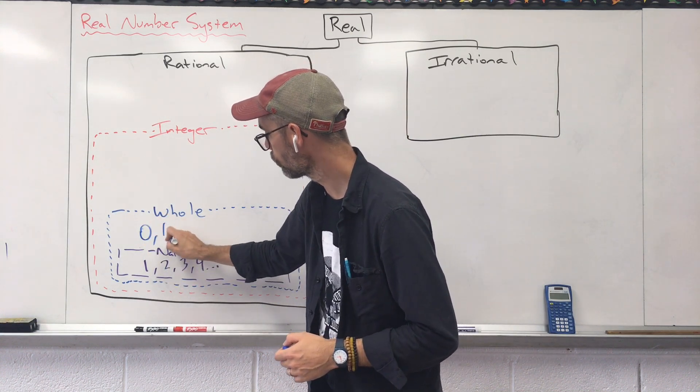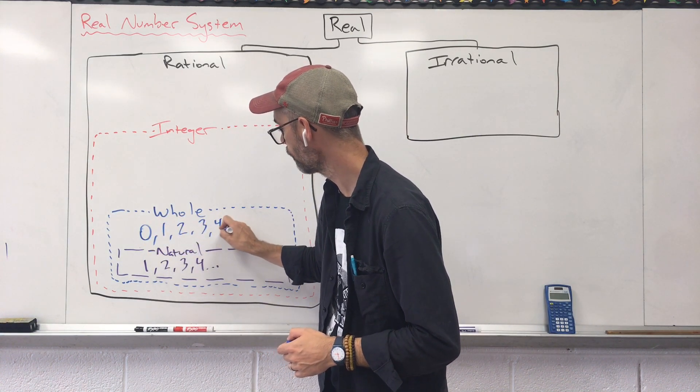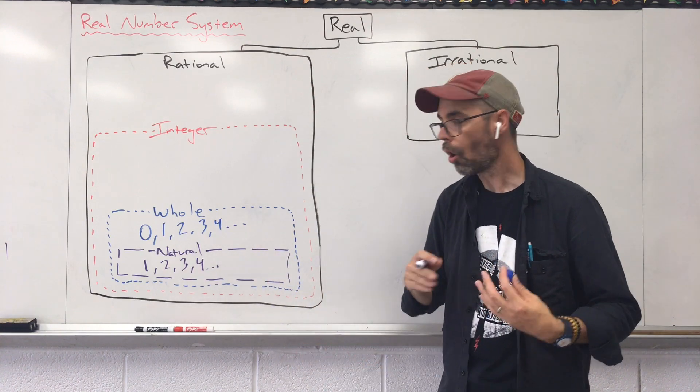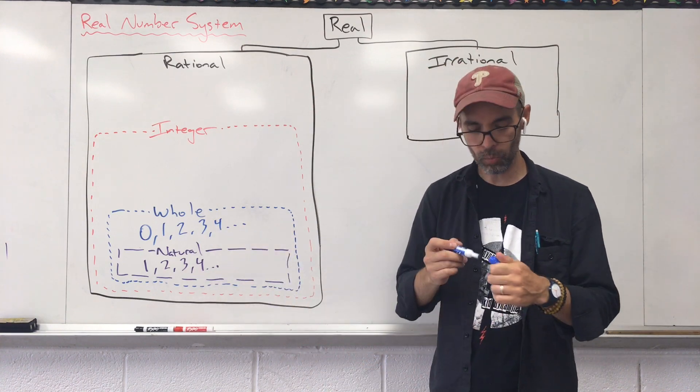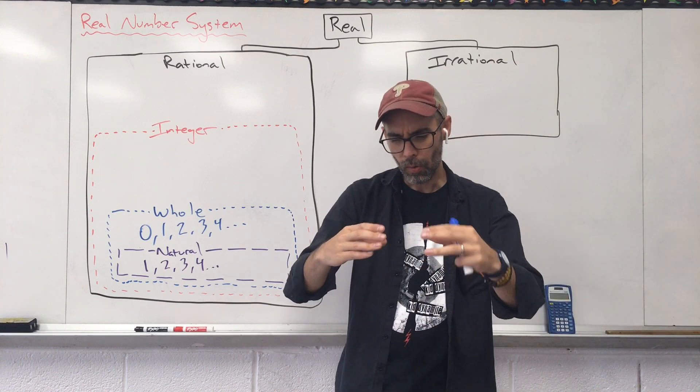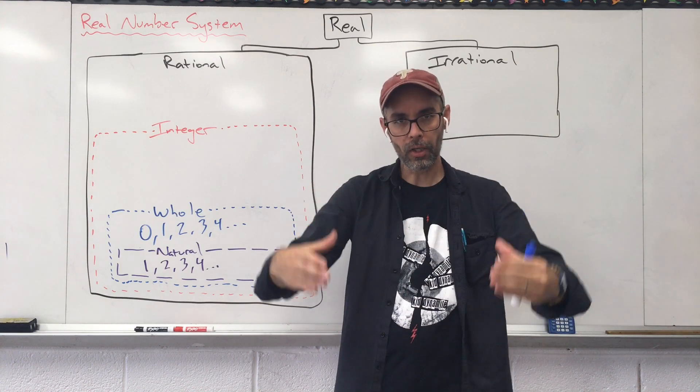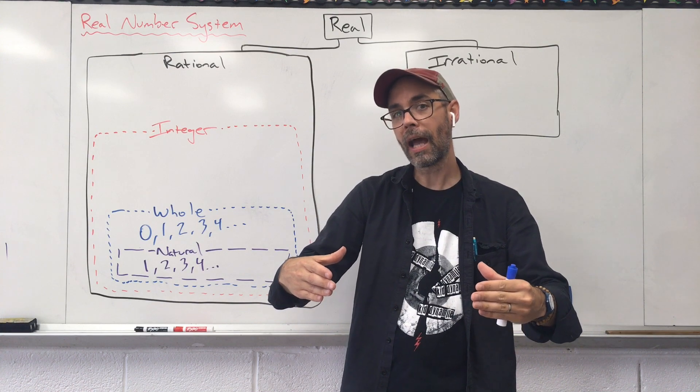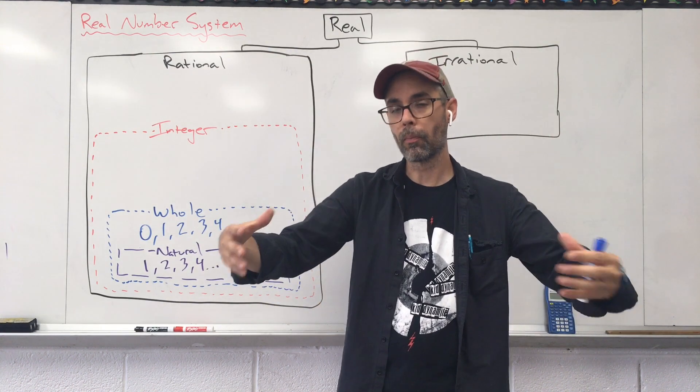And then it also is 1, 2, 3, 4. It includes all of these natural numbers that we just had below it. So think of it as if we've got a box within a bigger box and we're going to keep categorizing them with bigger boxes.